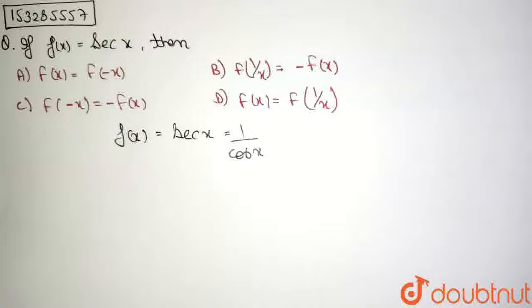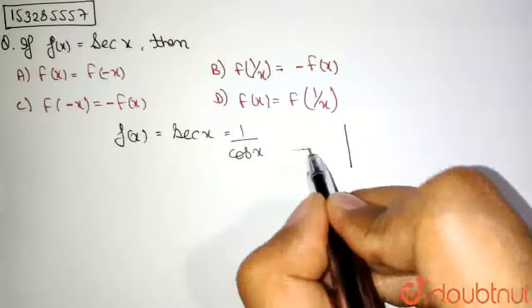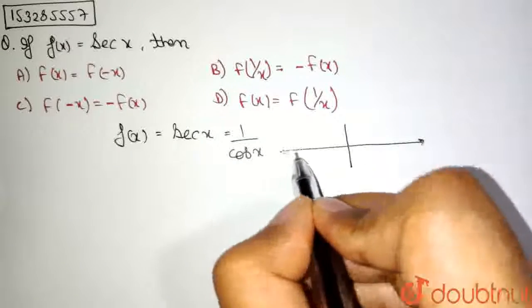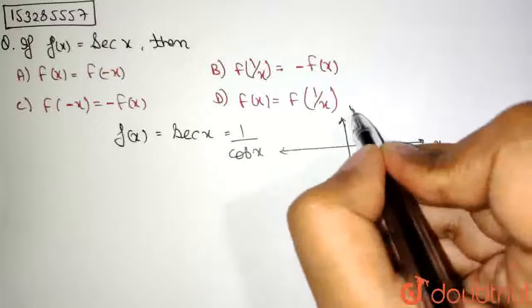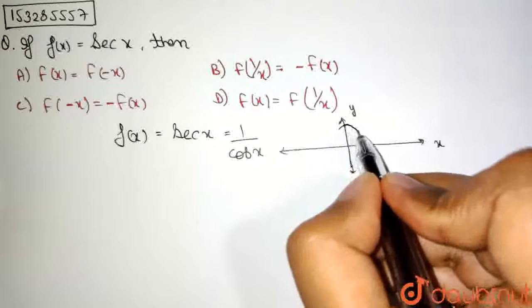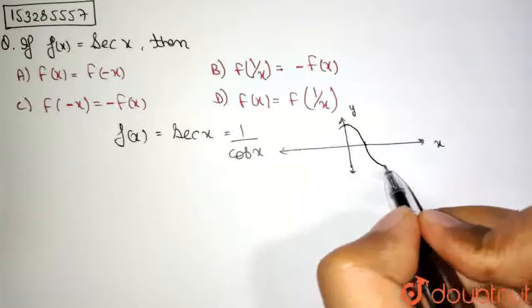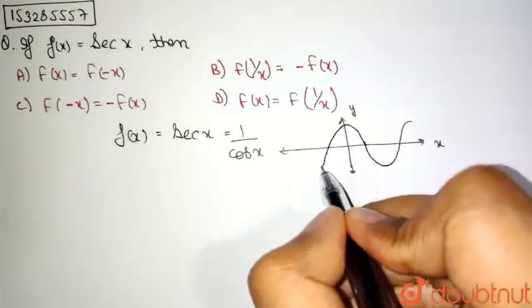If we recollect the graph of cos of x, this is the x-axis, this is the y-axis. And if we draw a rough figure, the value of cos of x is like this. The graph of cos of x runs like this.